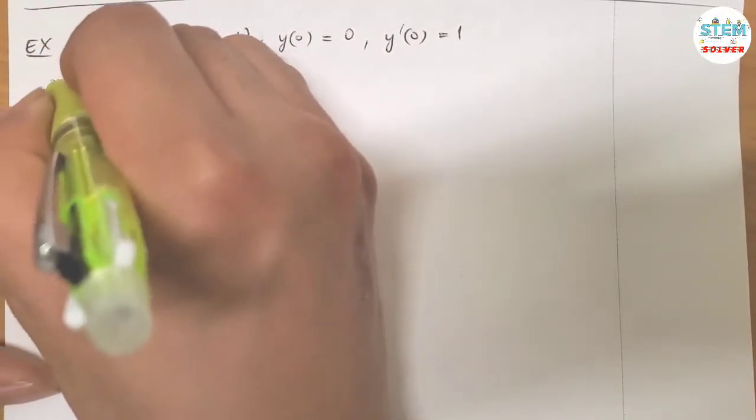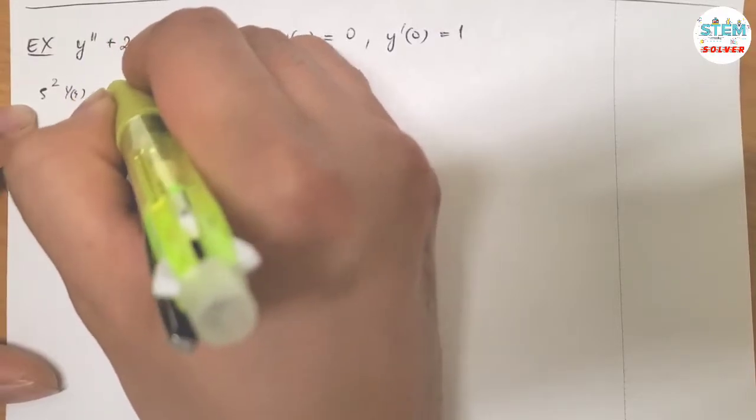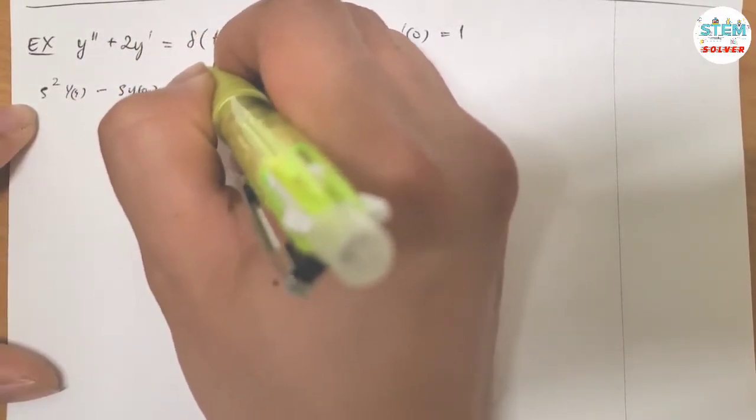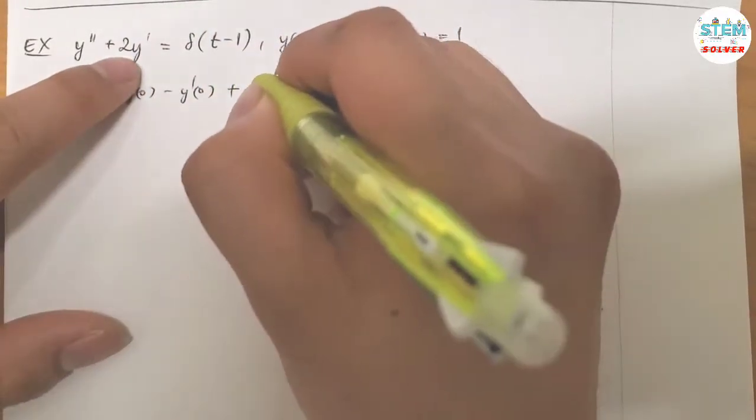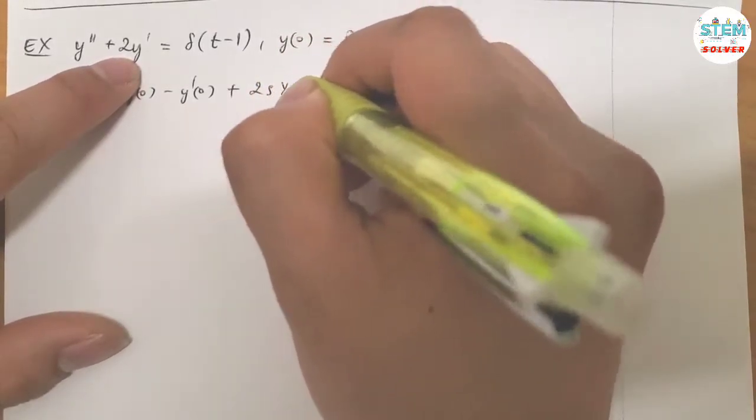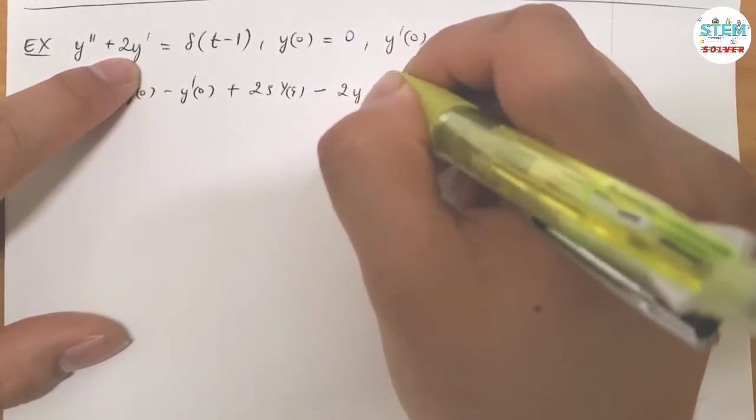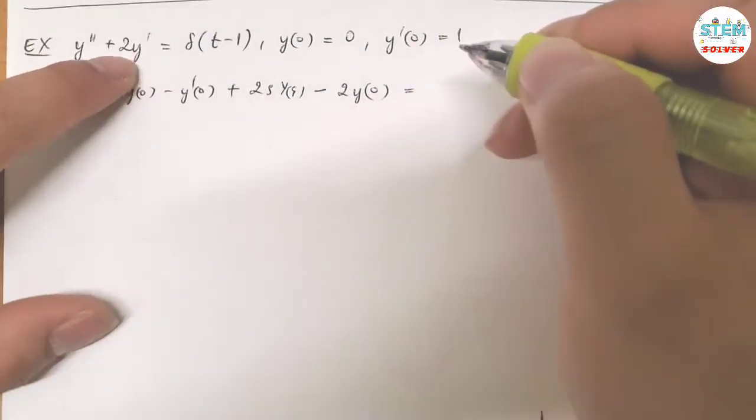So I have S Y times capital Y of S minus S Y of 0 minus Y prime of 0 plus this one 2S capital Y of S minus 2Y of 0 equals, so for this one...